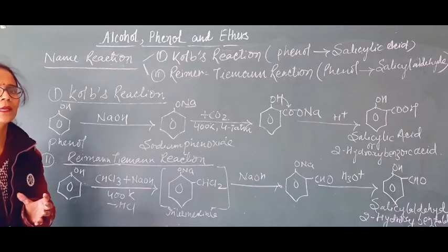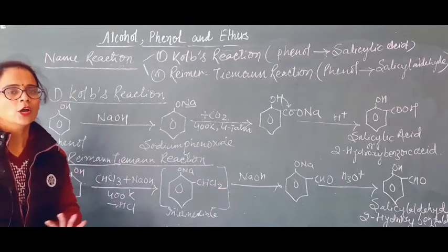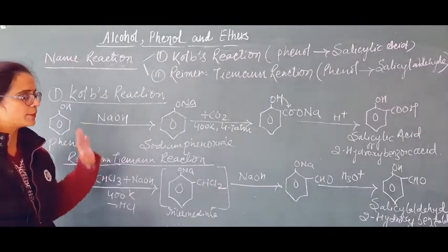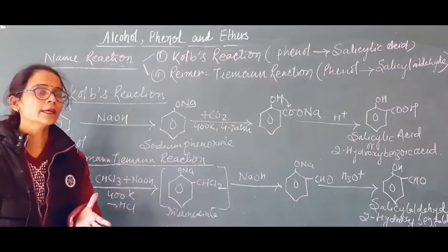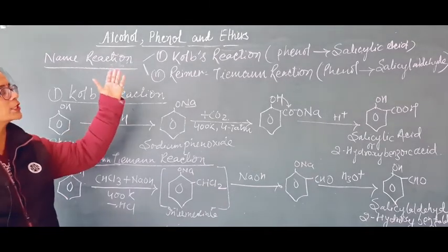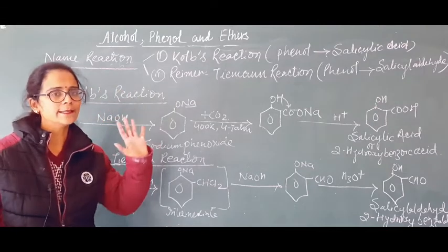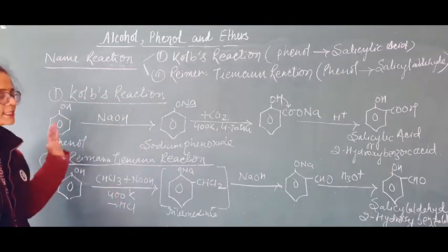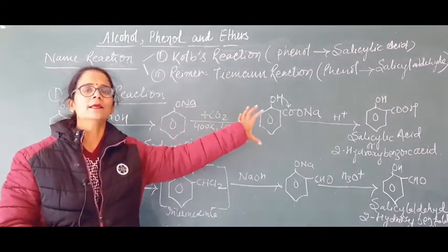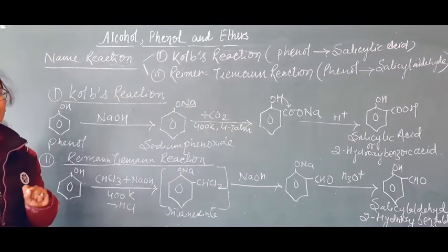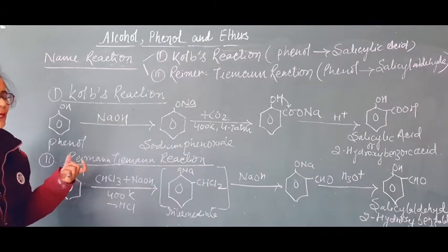If you want to cover 20 marks in organic chemistry, you have to cover them one or two marks at a time. From the second chapter — alcohol, phenol, ether — something is definitely asked every time. You just need to identify it. That's why you must know: on seeing Kolbe reaction, phenol to salicylic acid should come to mind; on seeing Reimer-Tiemann, phenol to salicylaldehyde. Both are three-step reactions. You must remember what reaction is done in each step.